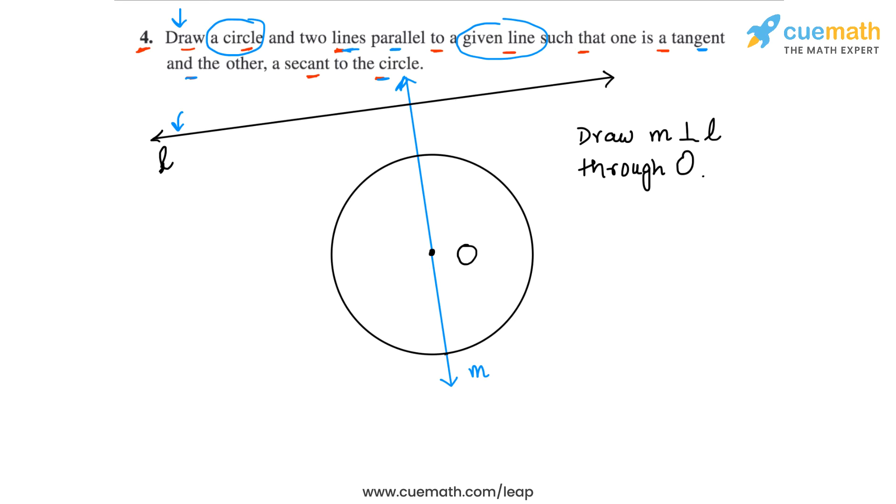Now what should be our next step? Well this line intersects the circle at two points. So let's take any one of those points. Let's take this point here, let's call it P, and let's take any other point on this line M inside the circle. So we've taken the point of intersection of M with the circle as P and this point inside the circle and on the line M as the point Q.